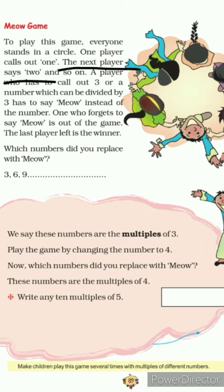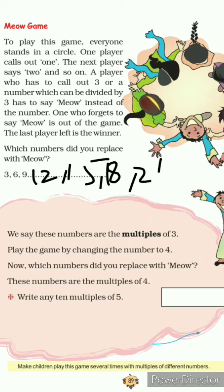The rule is: any player who has to call out a number divisible by 3 — like 3, 6, 9, 12, 15, 18, 21, 24 — must say 'mu' instead of the number. If someone says the number instead of 'mu', they are out of the game. So all the multiples of 3 are replaced by 'mu'.